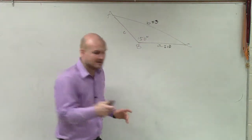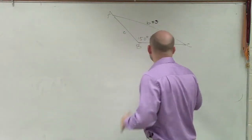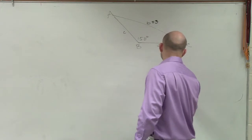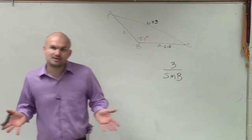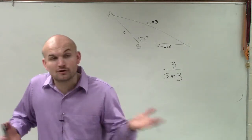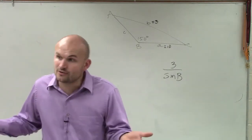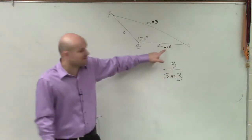So now that I have my ratio, I'll write down that ratio as 3 over the sine of B. Now, what am I going to compare it to? How am I going to create a proportion? Well, you want to create a proportion with the other length or angle that you have. In this case, I have angle A.